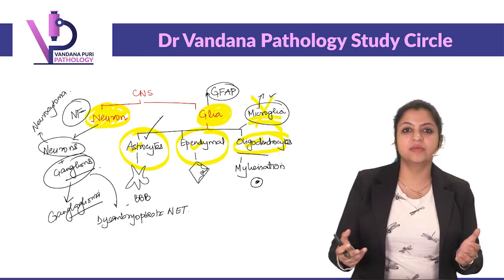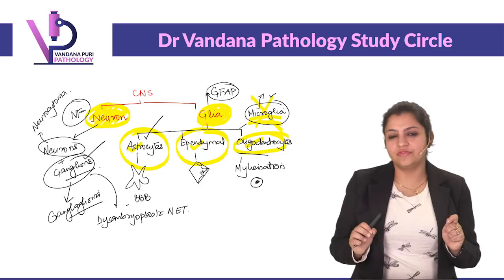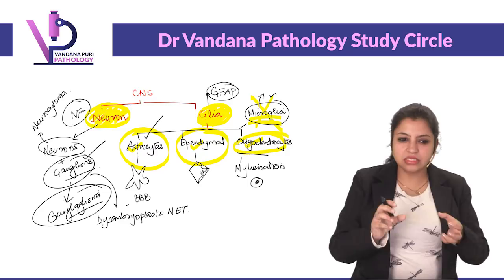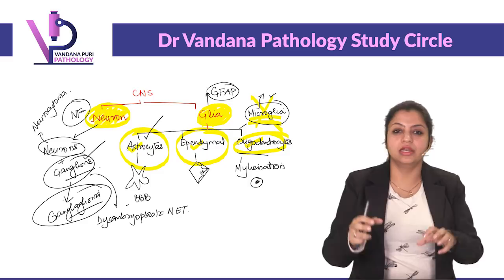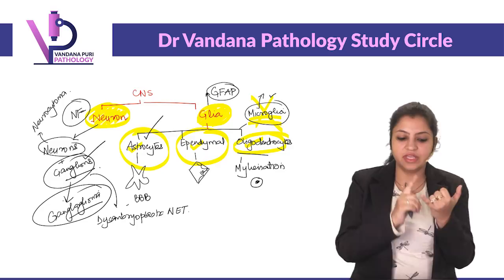The most common type of neuronal tumor is ganglioglioma. The name 'ganglio' refers to neuronal and 'glioma' refers to glia — so ganglioglioma has some part of glial tissue also. Therefore, gangliogliomas are considered mixed neuroglial tumors.